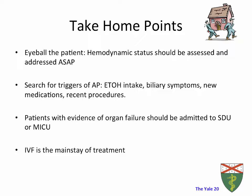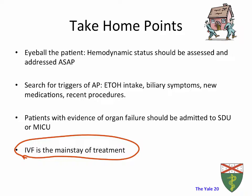A few take-home points: Eyeball the patient as soon as you hear about them — hemodynamic status is one of the most important and often overlooked factors. Do a thorough history looking for triggers: alcohol use, biliary symptoms, new medications, recent procedures, and family history of autoimmune diseases. In patients with evidence of acute organ failure — elevated lactate, elevated creatinine, or elevated troponin — consider stepping them up to intermediate or higher level of care such as a medical intensive care unit. Most importantly, intravenous fluid is the mainstay of treatment of acute pancreatitis and should always, always, always be initiated as part of treatment.